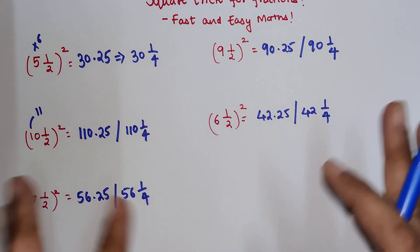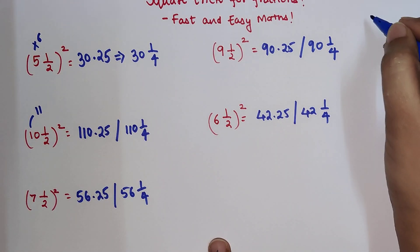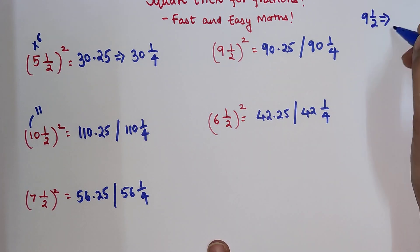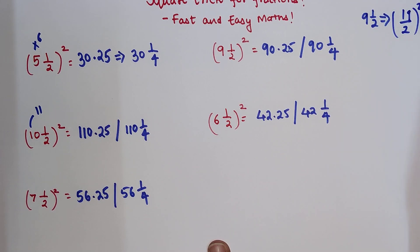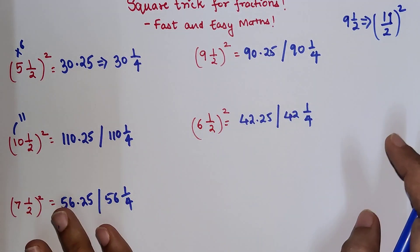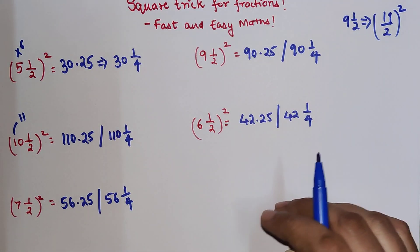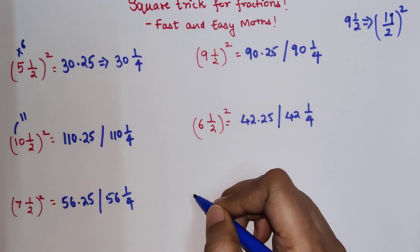Obviously, after learning this trick, I am telling you, you will never use the traditional method of 9 1 by 2, first convert it into improper form, that is 19 upon 2, then take the square and all of that you will not do. So now, over here, the trick explanation.